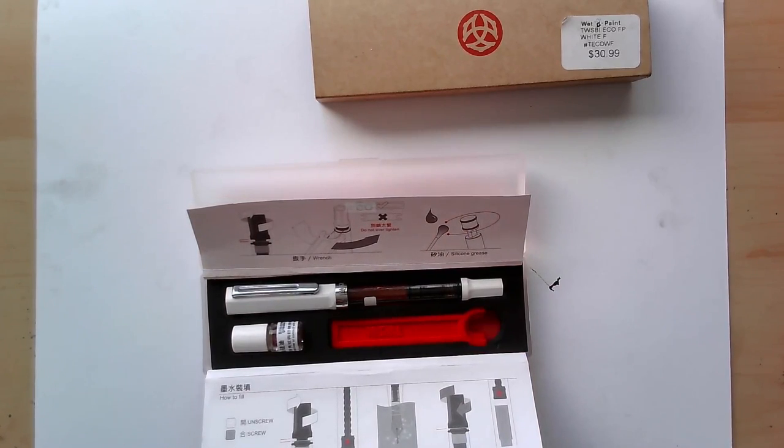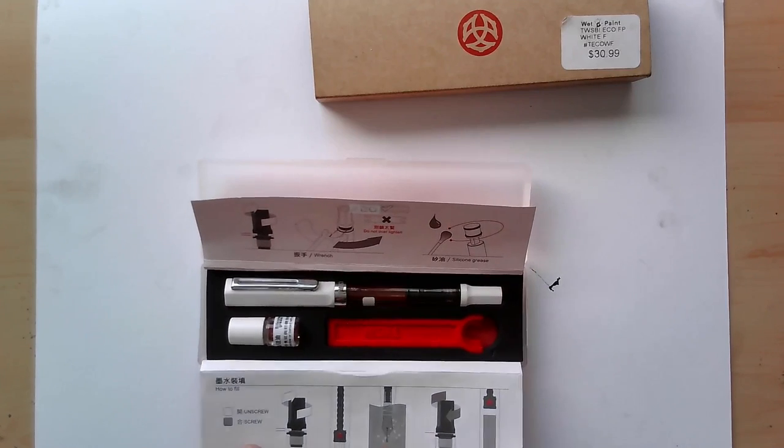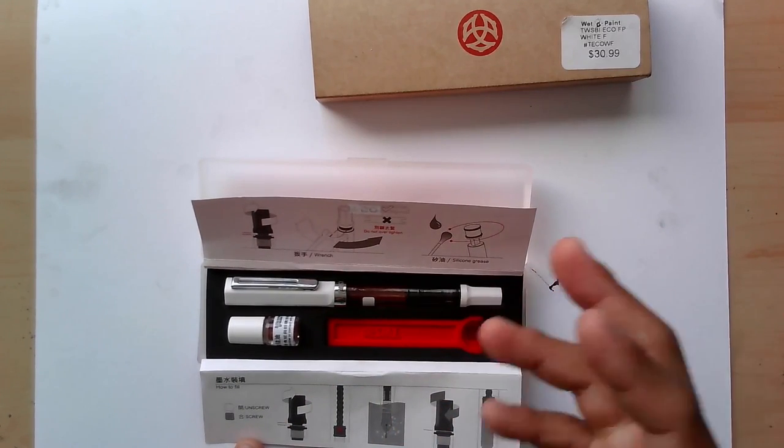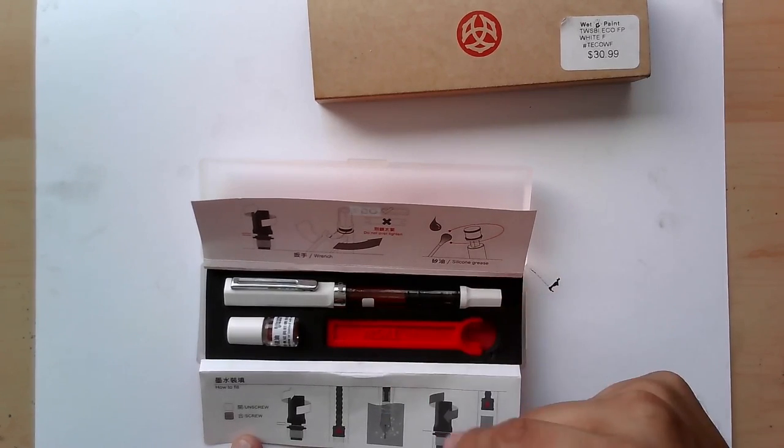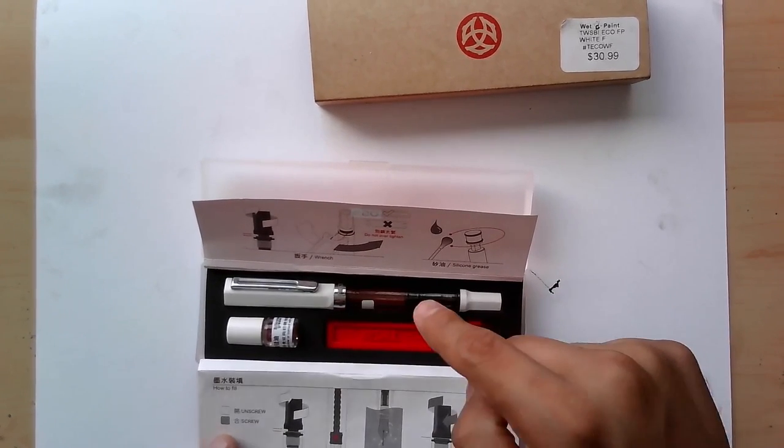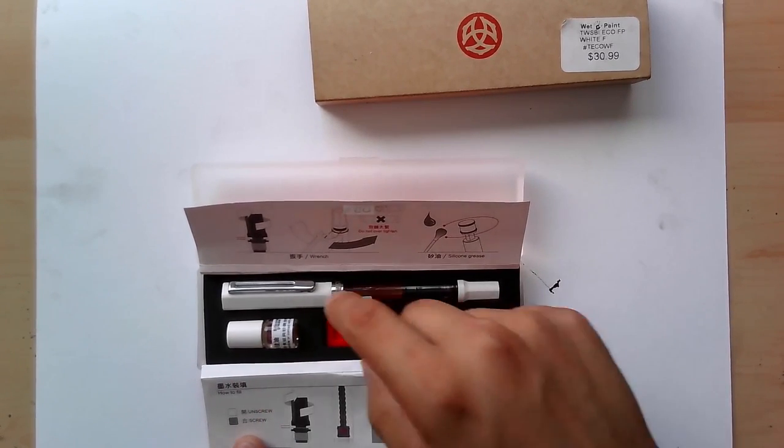But when you open the box, you have your instructions here that tell you how to actually operate the pen and get it so that you can actually get the ink inside the reservoir there. And it comes with a little bit of silicone grease, a wrench, and then the pen itself.